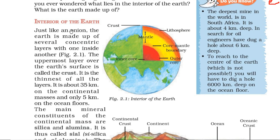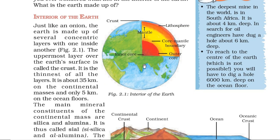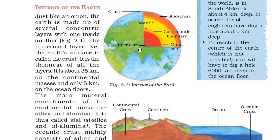This is the interior of the earth. Just like an onion, the earth is made up of several concentric circles with one inside another — that is different peels of onion. This uppermost layer or uppermost surface is called the crust.